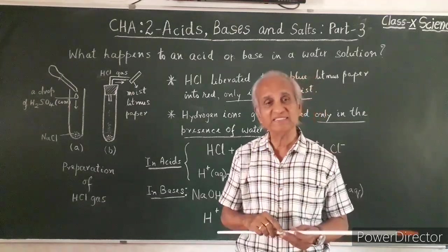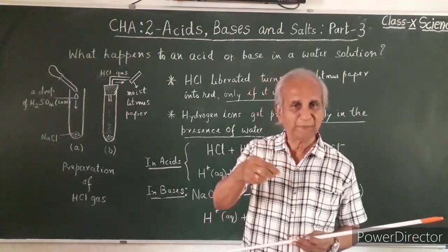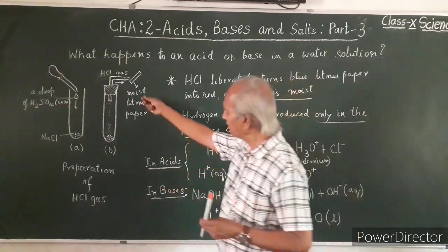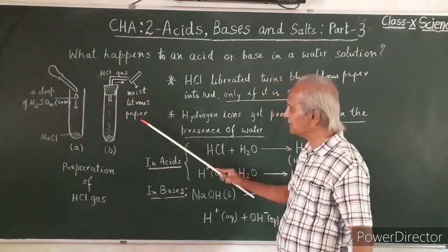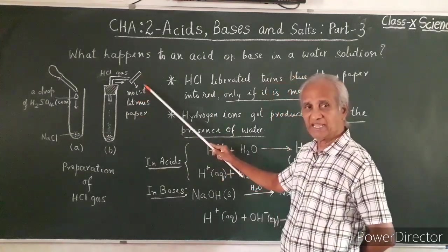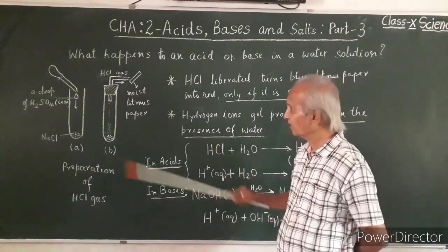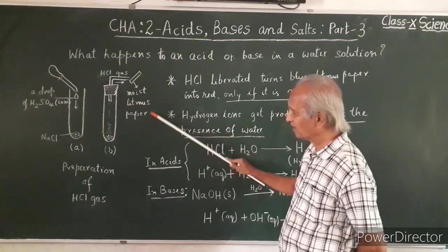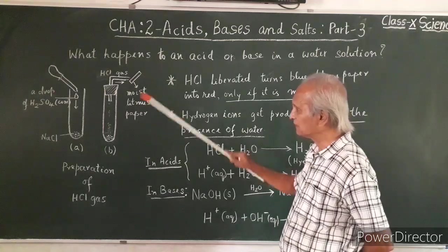You may not find any change in color with dry paper. Then dip that blue litmus paper in water and hold it there. If you hold dry litmus paper, you do not see any change in color. But the moment you hold a moist litmus paper, it is blue in color.